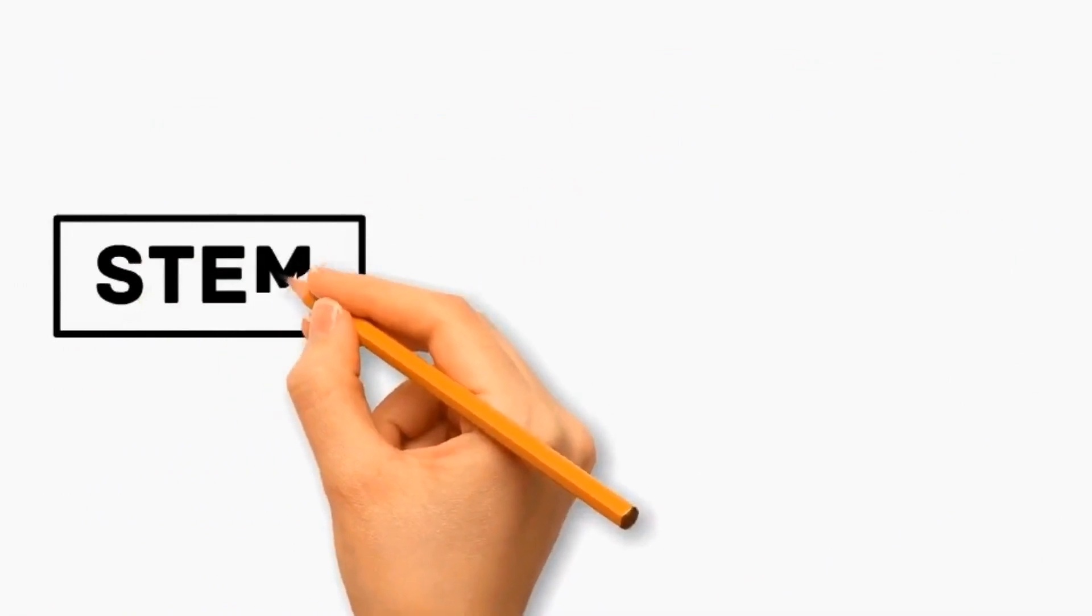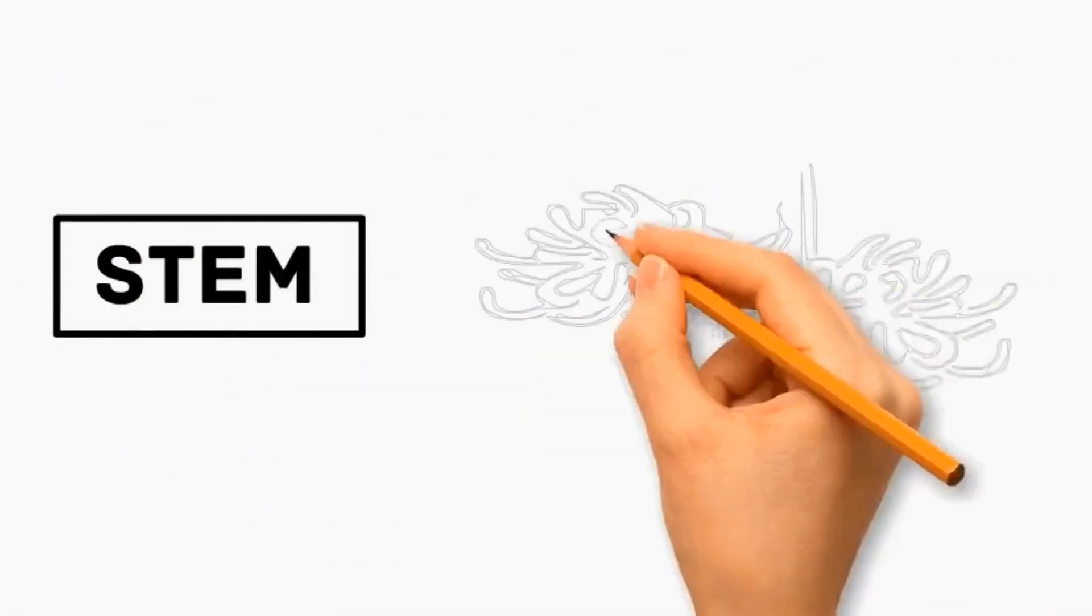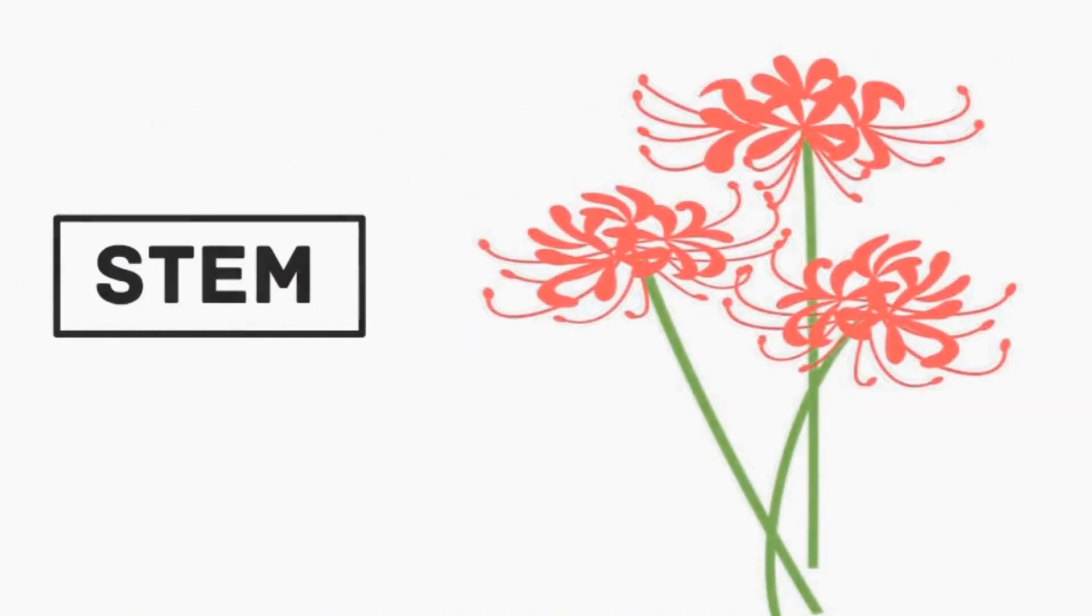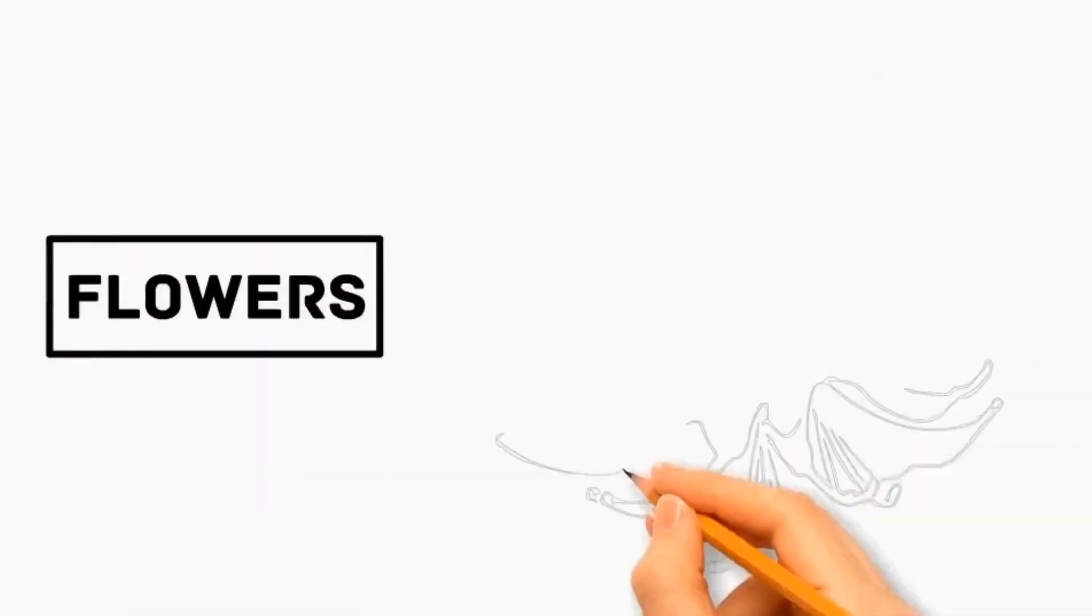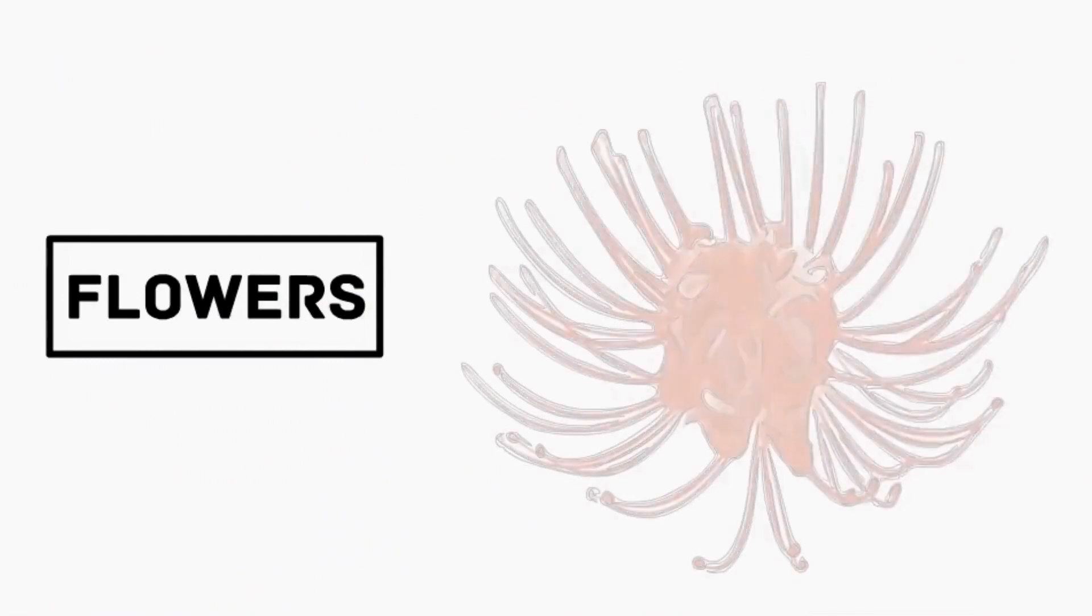Number two: Stem. It has a long, smooth stalk that emerges from the ground and can reach a height of up to 20 to 30 inches. Number three: Flowers. It is striking flower with bright red petals and long stamens, blooms in late summer or early fall.